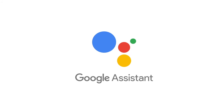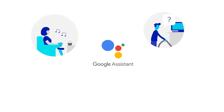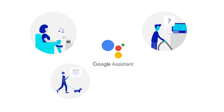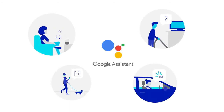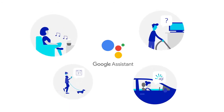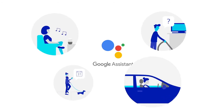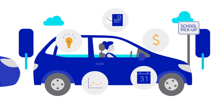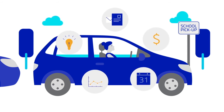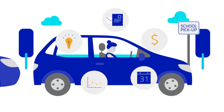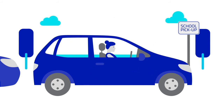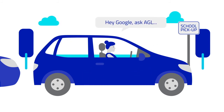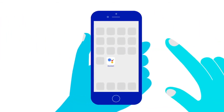The Google Assistant is the voice-controlled service that allows you to play music, ask questions, plan your day, and now get updates on your AGL account. It doesn't matter whether you're at home or on the move. The Google Assistant can help you manage your AGL energy account with simple voice commands, so you don't have to log into your account or wait on the phone. Just say, 'Hey Google, ask AGL.' Here's how to get the AGL action up and running.